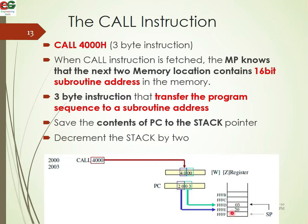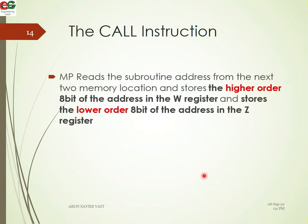For the CALL instruction steps, we will use registers W and Z. The microprocessor reads the subroutine address from the next two memory locations and stores the higher-order address in W and the lower-order address in Z.